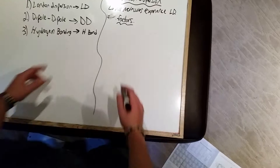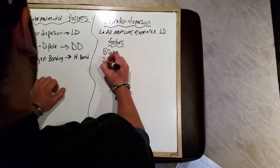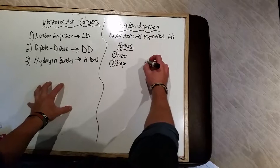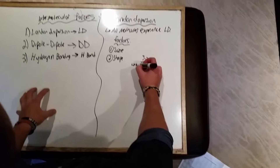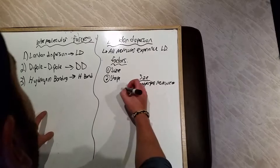However, there are some factors that contribute to how much London dispersion is experienced between different molecules. The first factor is size, and the second one is shape. The bigger the molecule, the greater the London dispersion force.